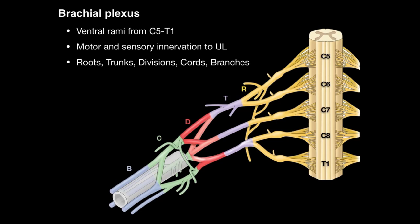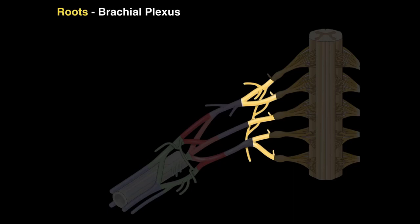First, let's talk about the roots. The roots are formed by the C5 to T1 ventral rami. From C5, a nerve called the dorsal scapular nerve arises — also known as coming off the C5 root of the brachial plexus — and it innervates the levator scapulae and rhomboid muscles.